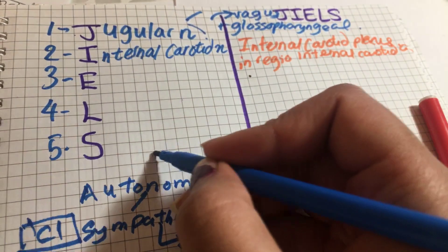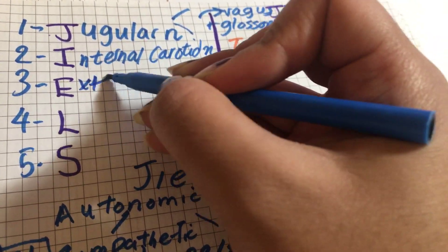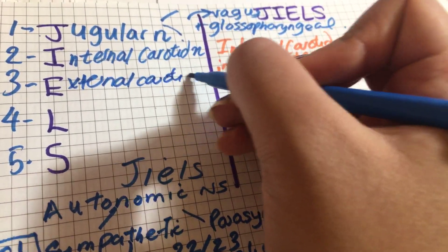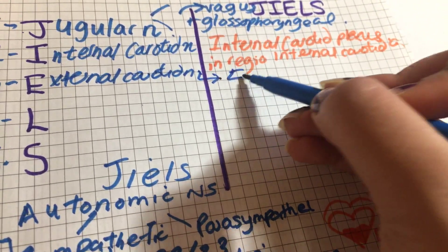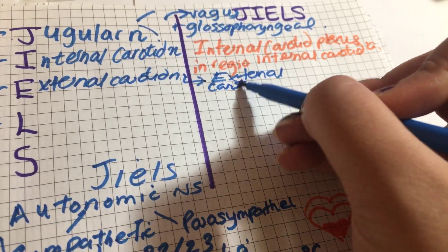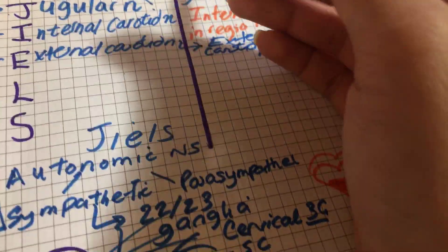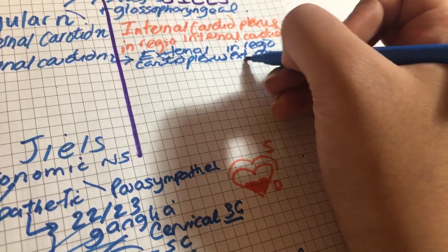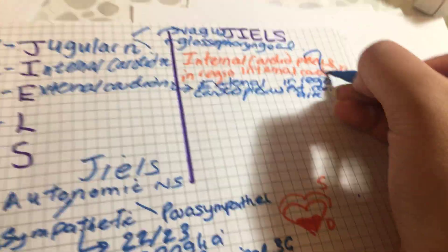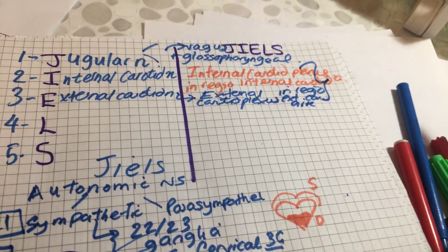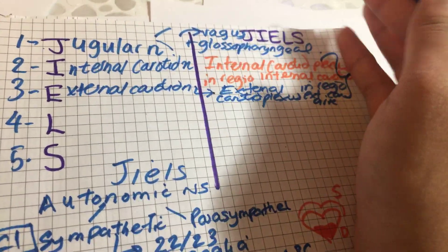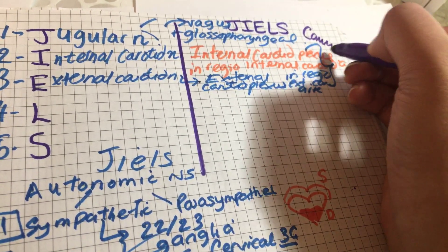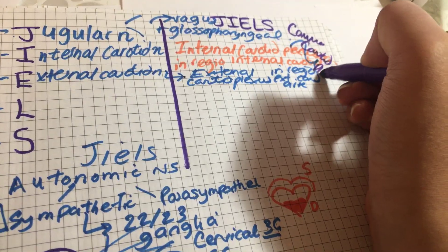You guessed it, the next nerve, by the way, remember the mnemonic GIELS. The next one is external carotid nerve, and this forms external carotid plexus in region of, or along, the external carotid artery. And these two combine to form the common carotid plexus.